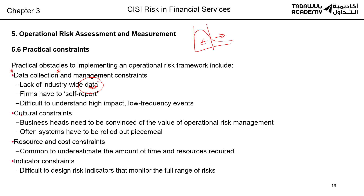Another way to assess risk is to speak with different departments — self-assessment. But if you've ever worked in a company, especially in a bank, not all departments like each other and not all of them will cooperate. There is always a cultural difference between the multiple departments in a bank, and getting them to work together is one of the biggest challenges the risk team faces, along with resource and cost constraints.